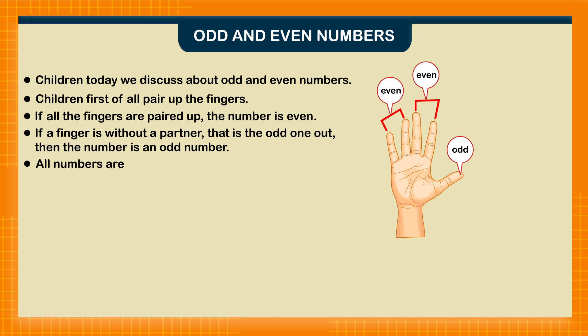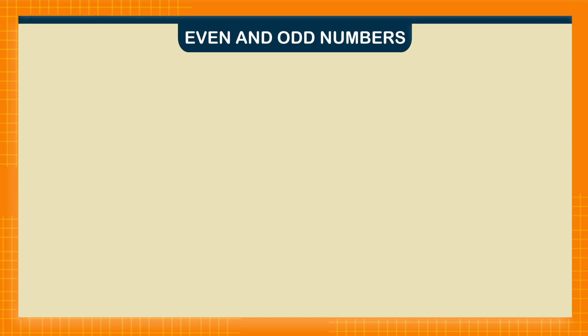All numbers are either odd or even. Even and odd numbers. Even numbers are numbers that can be divided into two pairs. For example,